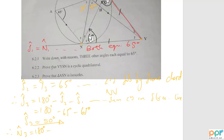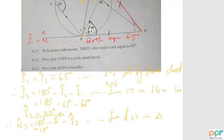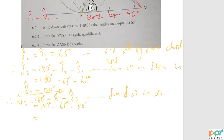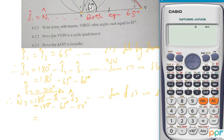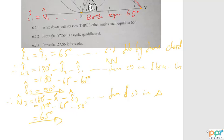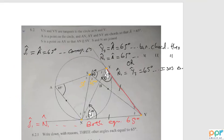And the N3 angle equals 180 degrees minus angle A minus angle S3, because of the sum of angles in a triangle. So 180 minus 65 minus 50, then your final answer will be 65 degrees.